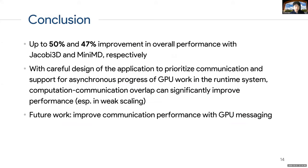To conclude, we've seen up to about 50% and 47% improvement in overall performance by using over-decomposition to achieve computation-communication overlap, demonstrated with two proxy applications: Jacobi 3D and MiniMD. The contribution of this work is demonstrating that with careful application design to prioritize communication, and support for asynchronous progress of GPU work inside the runtime, we're able to effectively achieve computation-communication overlap, which significantly improves performance especially in weak scaling scenarios. As future work, we're also tackling the first direction—improving communication performance itself—using GPU messaging, which essentially allows direct transfers between GPUs.